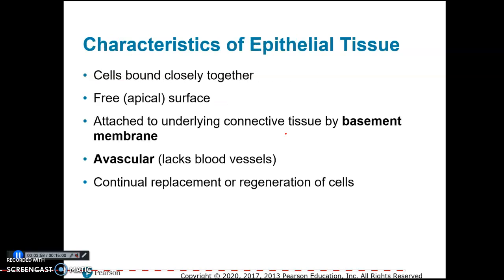The characteristics that all types of epithelial tissue have in common: first, the cells are bound closely together — there's not a lot of space between the cells. They have a free surface called the apical surface, which is either exposed to the atmosphere and environment, like the surface of the skin.